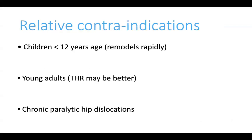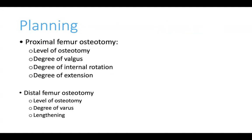The relative contraindications include very young children, because the osteotomy can easily remodel and may need to be repeated closer to skeletal maturity. In younger adults, total hip replacement would likely be a better option, so in older patients PSO/IHR may not be ideal. Chronic paralytic hip dislocation is also a relative contraindication.